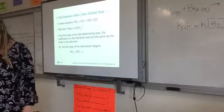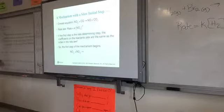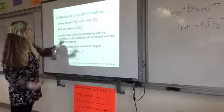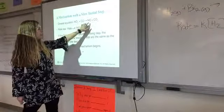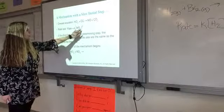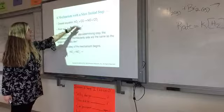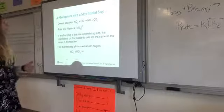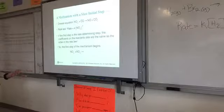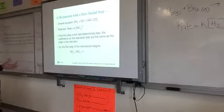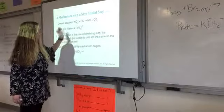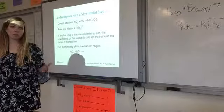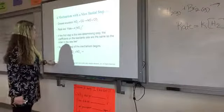So the next slide is going to introduce you to a concept or to a mechanism with a slow initial step. So what they're saying here is here's the overall equation. NO2 plus carbon monoxide produces NO plus carbon dioxide, and then they're showing you the rate law. So if you look at this rate law, the rate law does not match the overall equation. Because the rate law is coming from the slow step, and we're not seeing the elementary steps on this slide. We're just seeing the overall reaction, and we're not looking at the actual mechanism. The rate law comes from the actual mechanism.